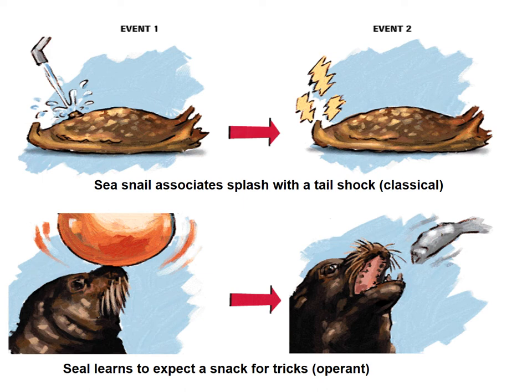Here we can see an example of classical conditioning, and then an example of operant conditioning which we'll learn in a different narrated slideshow. Think about a simple sea snail — something that is neutral if it spends most of its life in water. If you splash it with water, it shouldn't have much of a response. However, if you take a sea snail and shock it with an electrical current applied to some part of its body, would you see a response? In fact, yes — it would show muscle constriction, muscle tightening, some movement in response to that electrical shock.